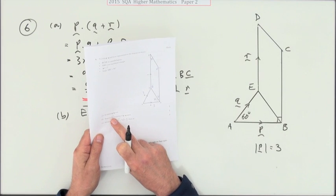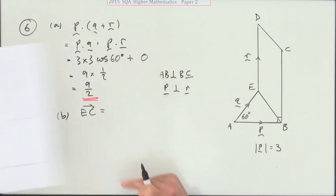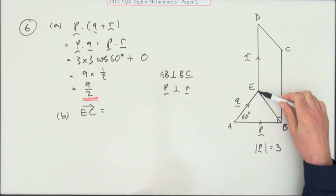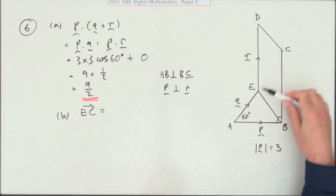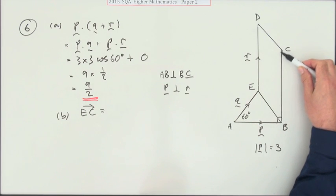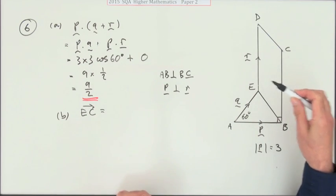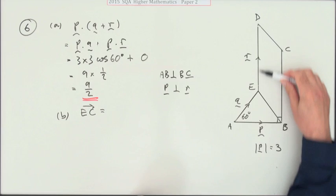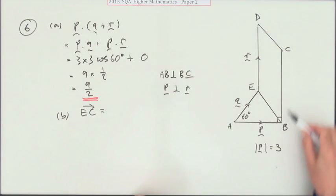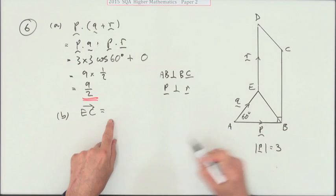Part b: Express EC in terms of p, q, and r. Now EC travels along this middle of the parallelogram. Well, if you can't travel across this waste ground, the rule with vectors is you'll have the same net result, the same displacement, by taking some other route. So you can go over the top or you can go around the bottom. I'm going to go around the bottom.